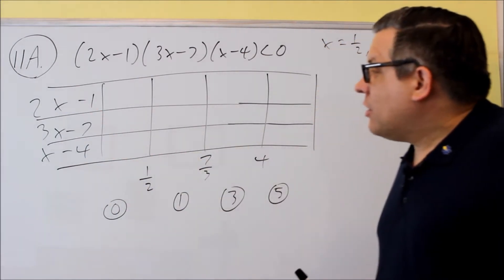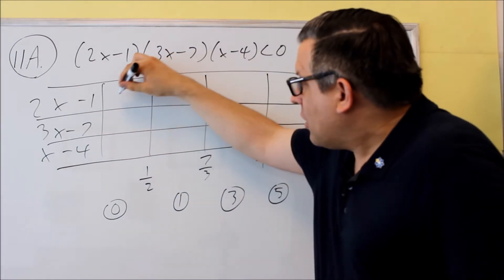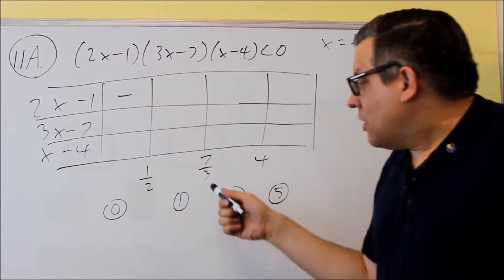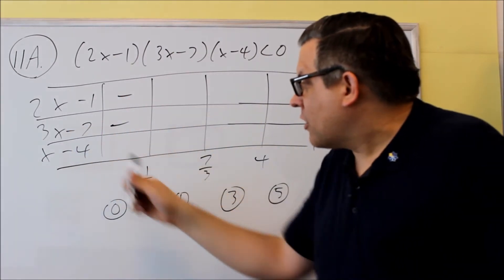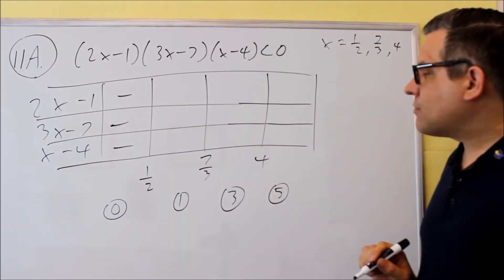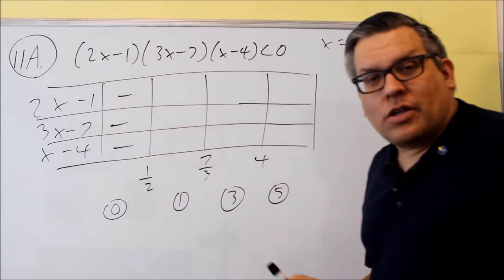If I put zero in there, I get zero minus one, negative. Next I'll put a zero in that one, I get a negative. Zero minus four, negative.